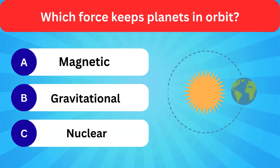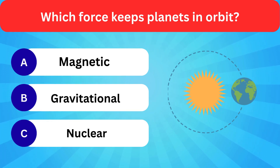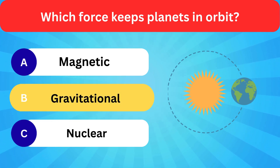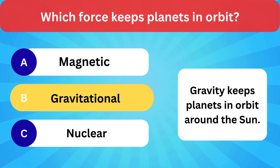Which force keeps planets in orbit? Options: Magnetic, Gravitational, Nuclear. Correct answer is gravitational. Gravity keeps planets in orbit around the sun.